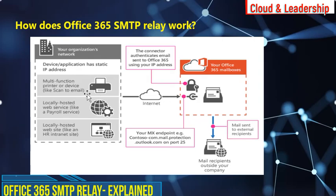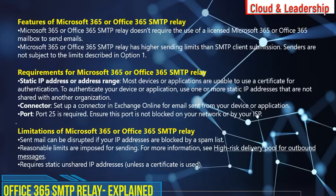How O365 SMTP relay works: you create a connector that establishes a connection between your O365 and your on-premises device or application, using a certificate or IP address. With this method, you can send email to both internal and external recipients.